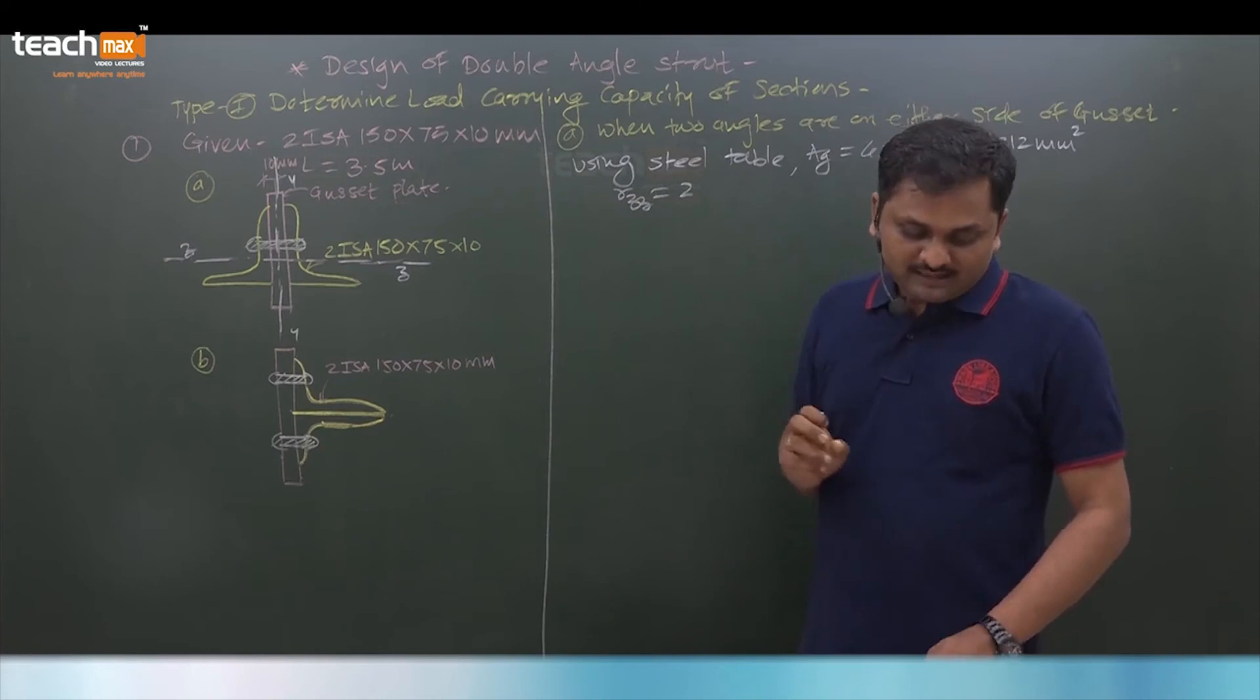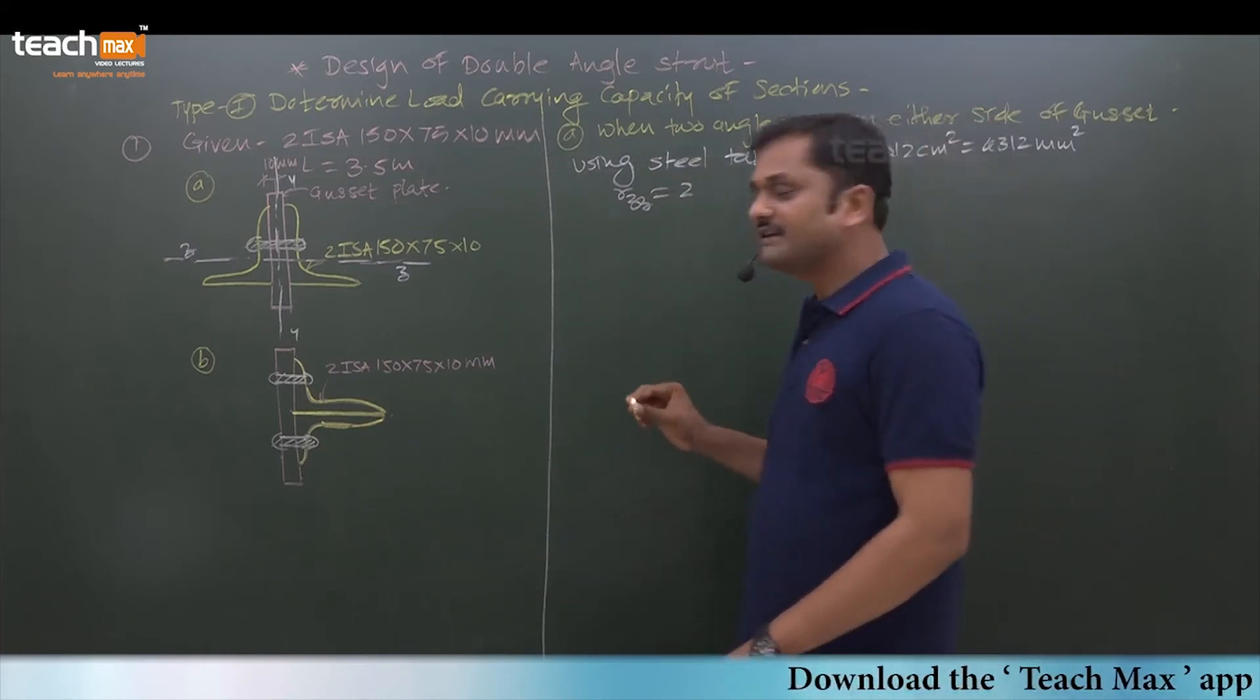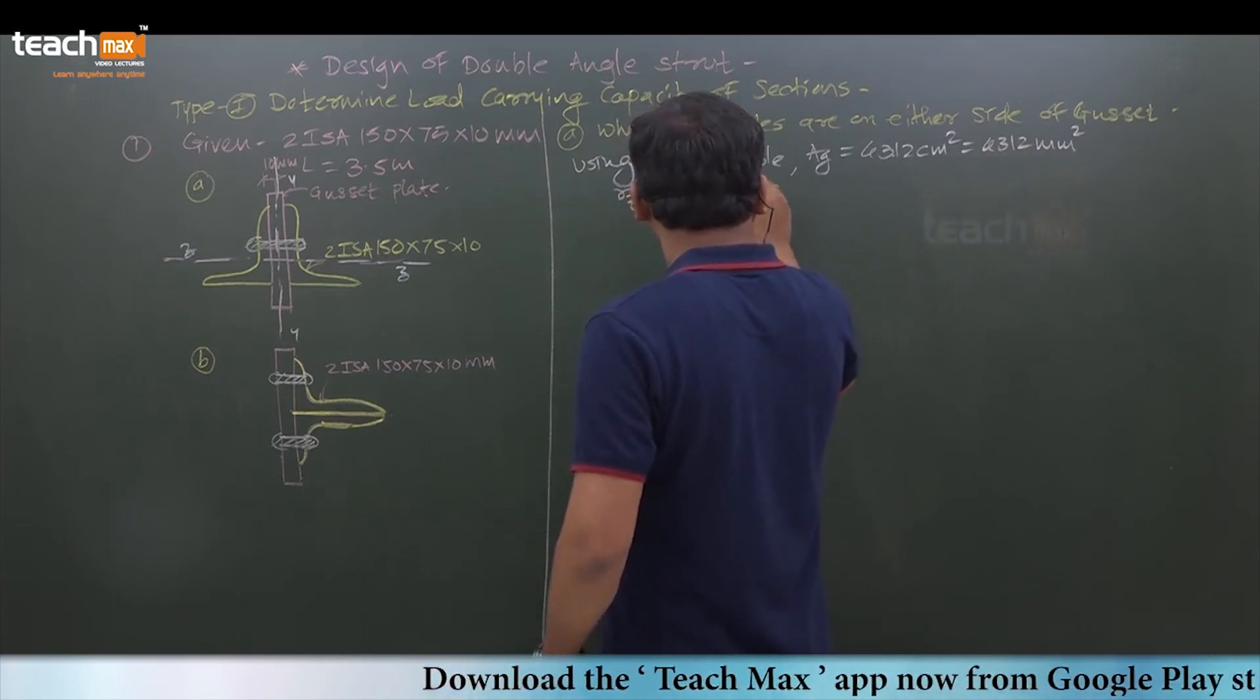So we need to find out separately rzz and ryy. So rzz we got: it is 4.81 centimeter, which means 48.1 mm.